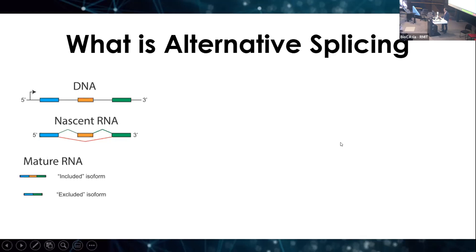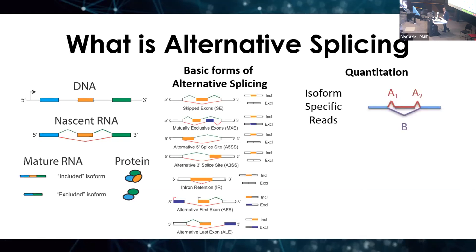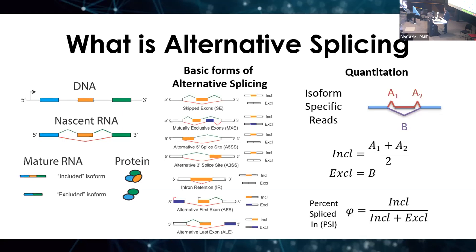This is important, not least because these different isoforms can form different proteins, some with different and sometimes opposite functions. There are seven basic forms of alternative splicing, describing how exons, parts of exons, or even introns can be included or excluded from messenger RNA. One approach for quantifying alternative splicing is to focus on reads that can only belong to either one or the other isoform — generally reads mapping across splice junctions. In a skipped exon example, we can estimate isoform abundances and compute a metric called percent spliced in (PSI), which is the fraction of included abundance over included plus excluded isoform abundances.